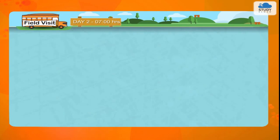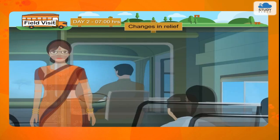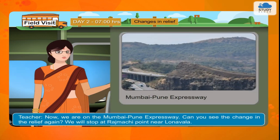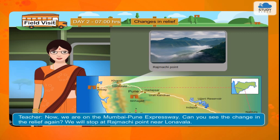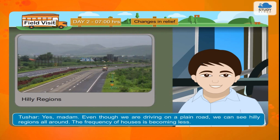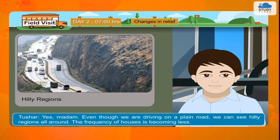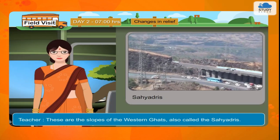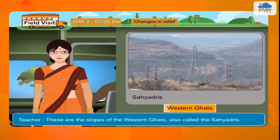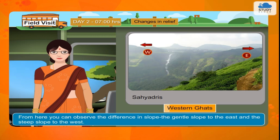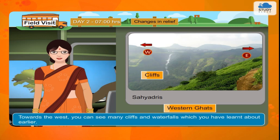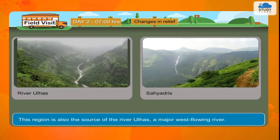Day 2. Changes in relief. Teacher: Now we are on the Mumbai-Pune Expressway. Can you see the change in the relief again? We will stop at Rajmachi Point near Lonavala. Tushar: Yes madam, even though we are driving on a plain road, we can see hilly regions all around. The frequency of houses is becoming less. Teacher: These are the slopes of the Western Ghats, also called the Sayadris. From here you can observe the difference in slope — the gentle slope to the east and the steep slope to the west. Towards the west you can see many cliffs and waterfalls. This region is also the source of the river Ulhas, a major west-flowing river.